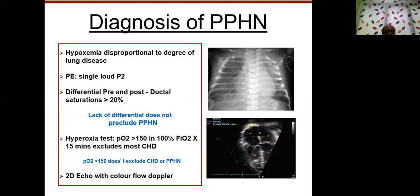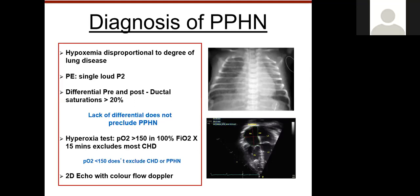Diagnosis of PPHN is clinical as well as supportive. When you see a child with disproportionate hypoxemia compared to lung disease and severe desaturations, consider either PPHN or congenital heart disease. A loud P2 on auscultation indicates severe pulmonary hypertension. Pre- and post-ductal saturations can show differential cyanosis — if the difference is more than 20% between the right radial artery and a lower limb, it indicates significant ductal shunting.